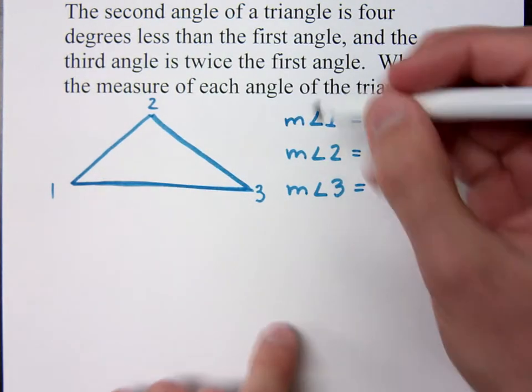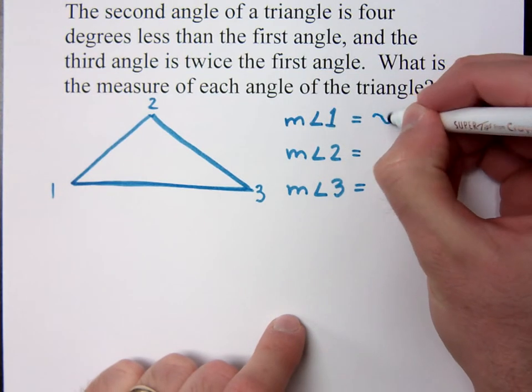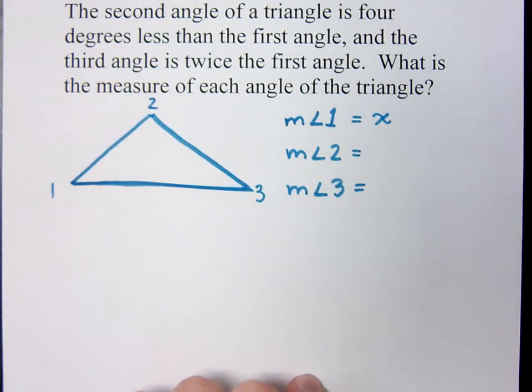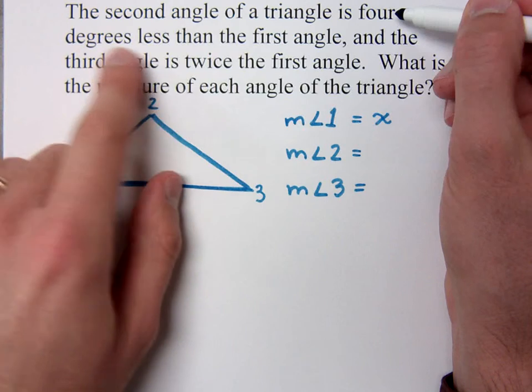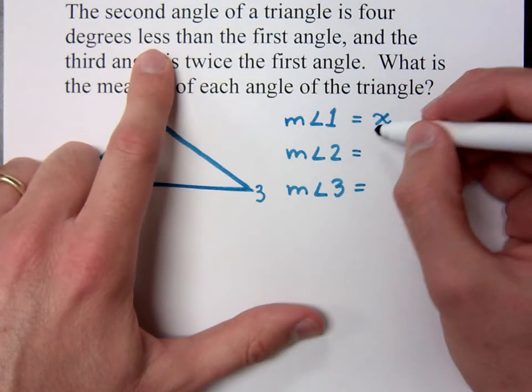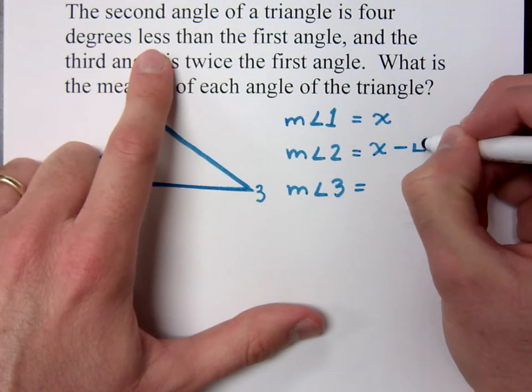Isn't that just x? Right. So let's just go ahead and say that the measure of angle one is represented by x. Now, if that's true, how would you represent the measure of the second angle? x minus four. Because it says four degrees less than. So I'm taking four away from the first one.